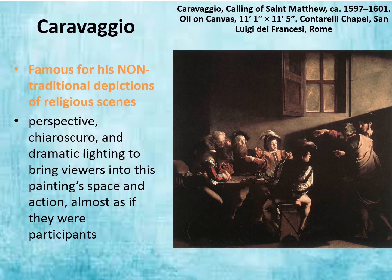Caravaggio is famous for his non-traditional depictions of religious scenes. This is really where we see that contrast of light and dark. He uses perspective, dramatic lighting, and chiaroscuro—that contrast of light and dark—to bring viewers into the painting space and action, almost as if they were participants. Generally with Baroque art, we are often getting a sense that we are part of the scene. When we're gazing upward, the feeling that the ceiling is opening up above us—we could potentially float up to the sky. There is a real interest in including the viewer in the scene.